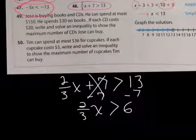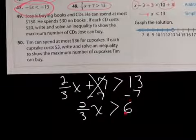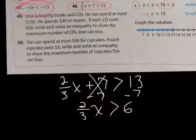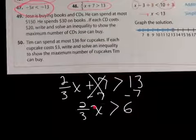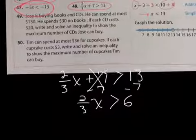So 2 thirds of a number is 6. I can already figure it out. I know x is 9 because this is 2 thirds of 9. So 2 thirds of a number is 6. So this has to be 9 because this is 2 thirds of 9. Makes sense. But how do we solve this now?